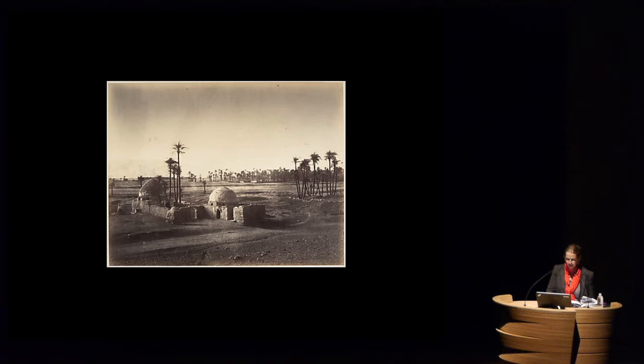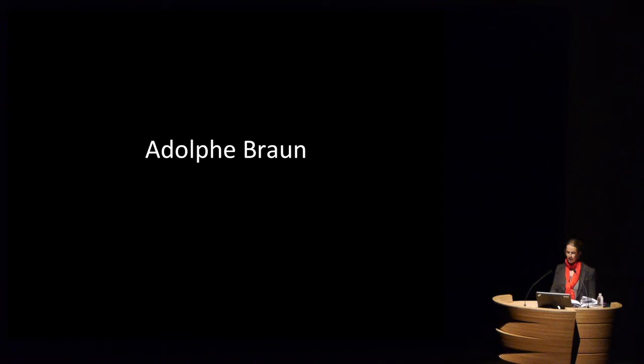This is another photograph by Le Gray — we do have a group of people here. Because he ended up living in Egypt, Le Gray is one who actually has a little bit more human presence than, for example, Frith or Ducamp. This is a mausoleum — an example of a non-Pharaonic site, showing the variety of different types of photographs Le Gray took. After 1860, photography of Egypt was dominated by professional commercial photographers who produced technically competent standardized views.